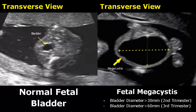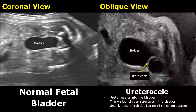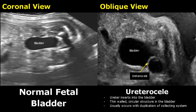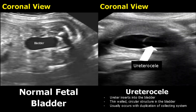A ureterocele occurs when the ureter inserts into the bladder. It appears as a thin-walled circular structure and usually occurs in the setting of duplication of collecting systems. The size of the circular structure can vary. Here we have another image of a ureterocele — you can see a circular structure inside the bladder.